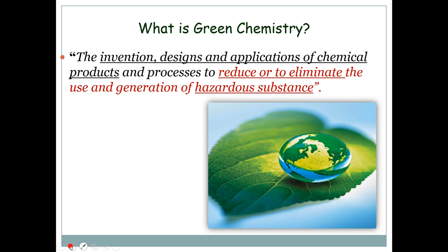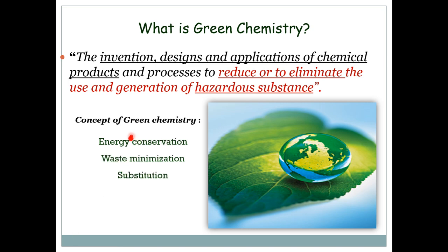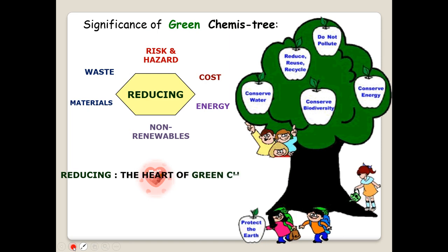Green chemistry believes in conservation of energy, waste minimization — producing minimum waste — and substitution: if a reaction gives a lot of waste product, substitute it with something else. It focuses on reducing cost, reducing energy required, reducing use of non-renewable sources, and encouraging use of renewable sources. The three R's — reduce, reuse, and recycle — are the heart of green chemistry.